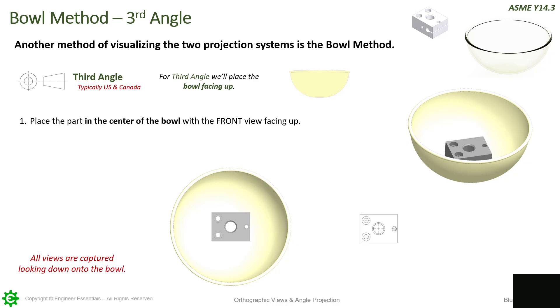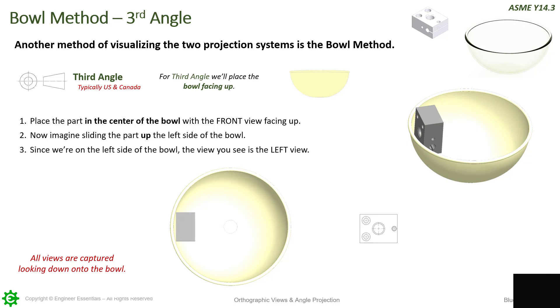Next, if you want to get one of the side views, all the views are captured looking down into the bowl. So, this is our front view right here. Now imagine sliding the part up to the left side of the bowl, just like this. That is your left view. Since we're on the left side of the bowl, the view you see is the left view. It'll appear like this on your drawing.